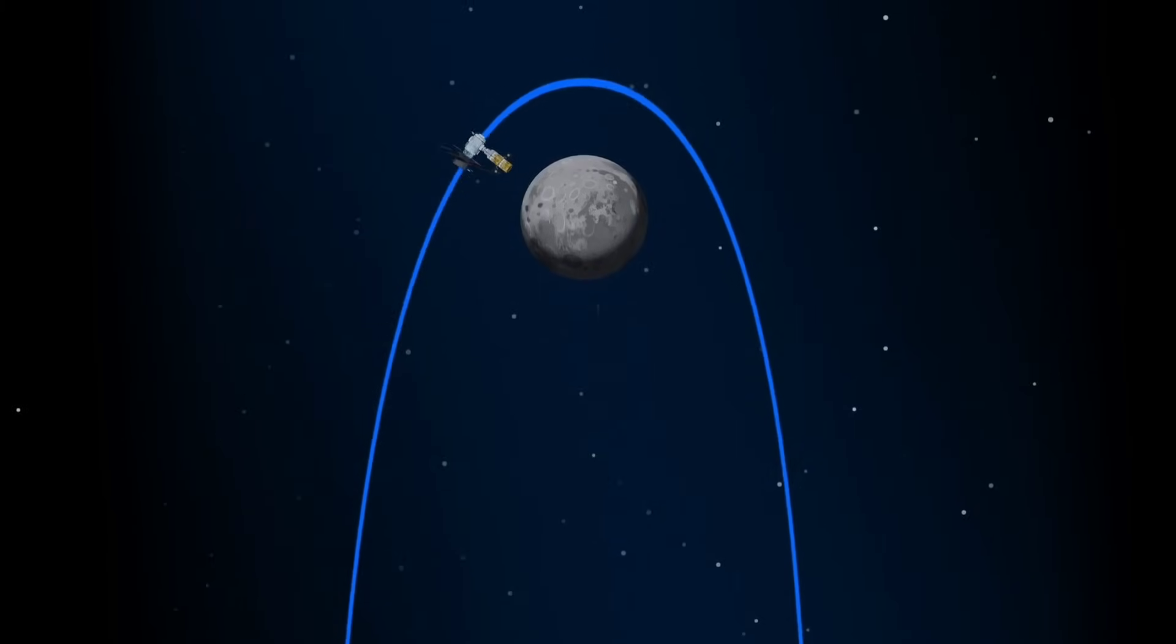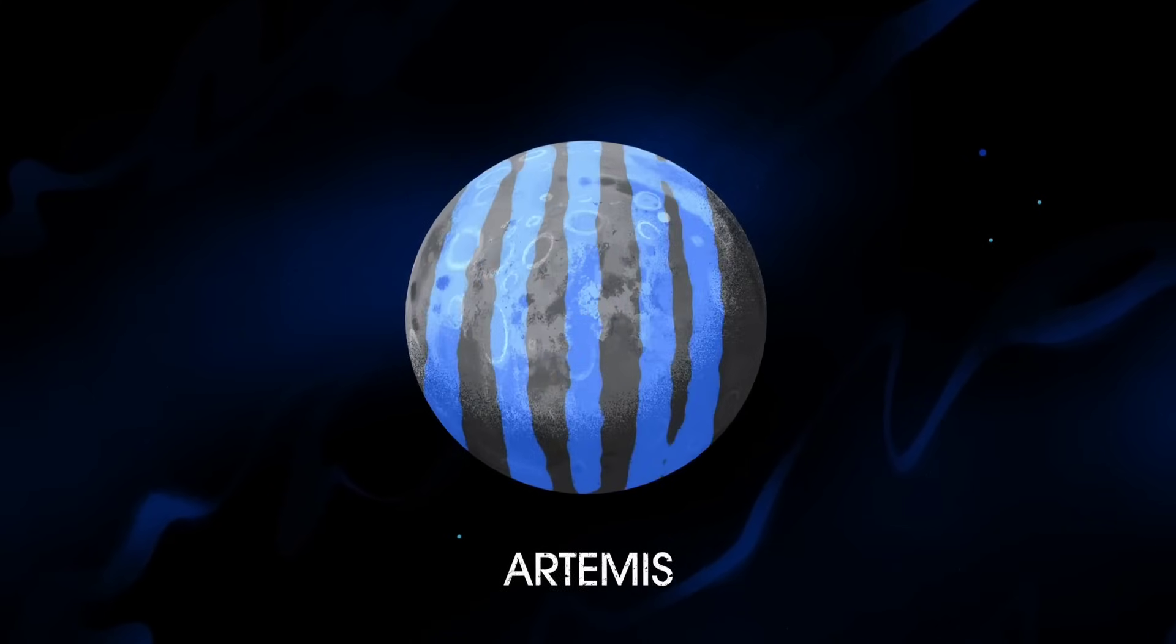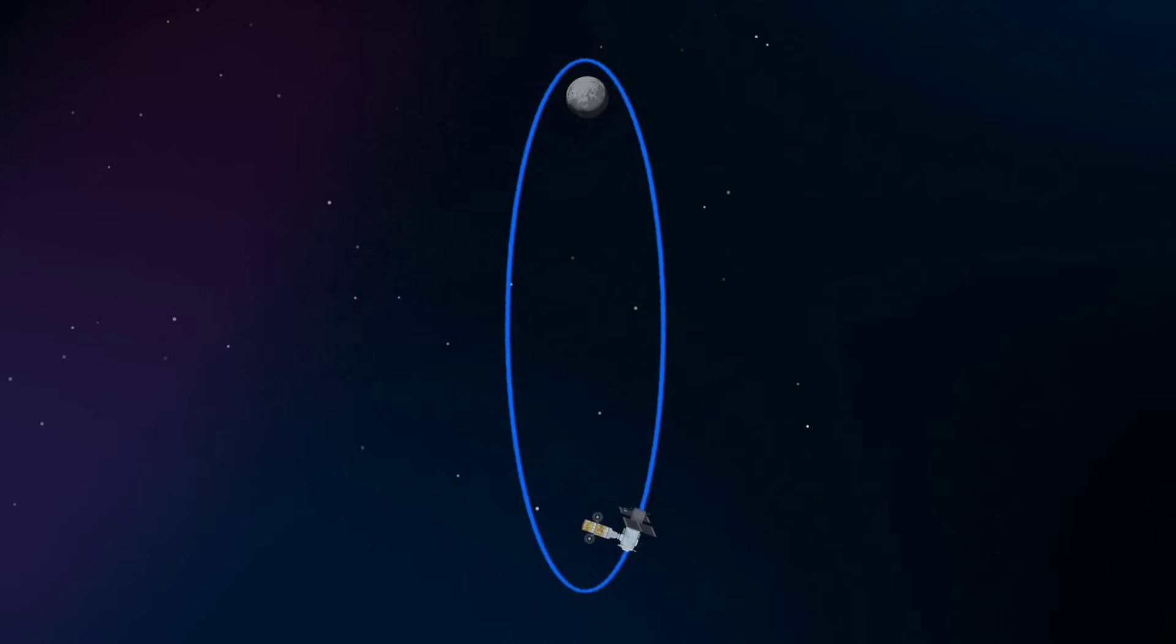Artemis 2 would have been delayed by a year or so to late 2026 if a new heat shield replacement had been required. But according to NASA, that isn't needed, at least not for this mission.